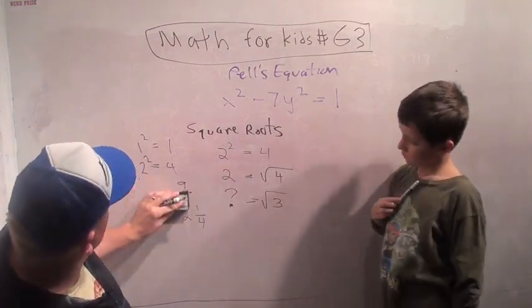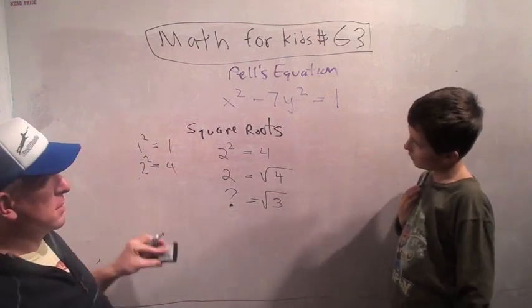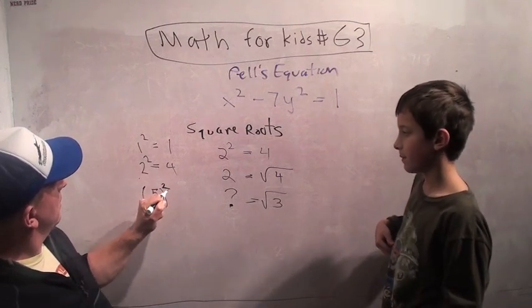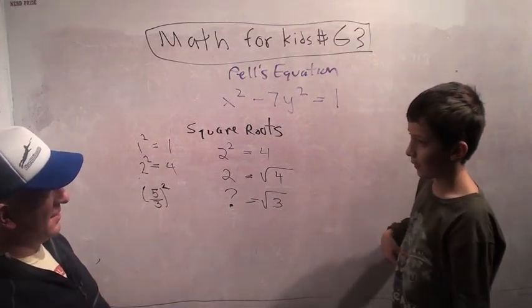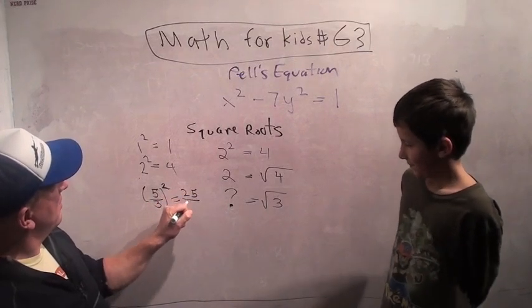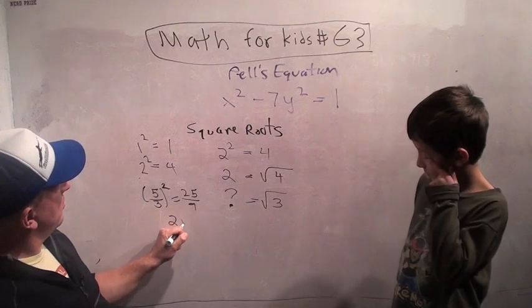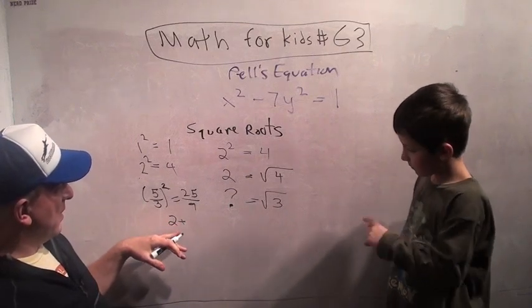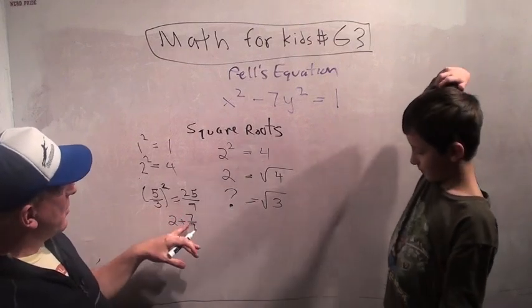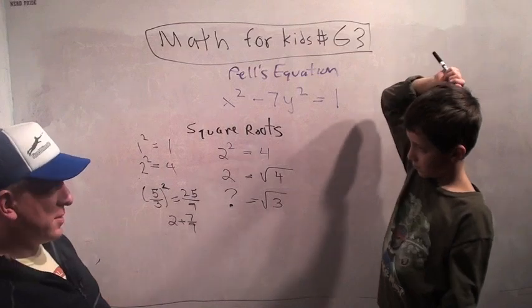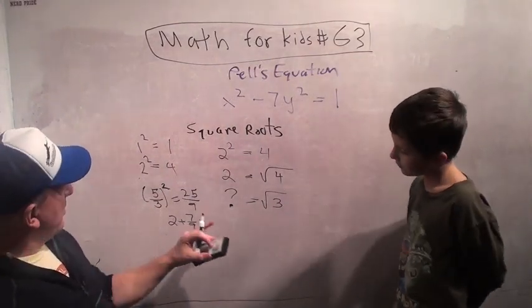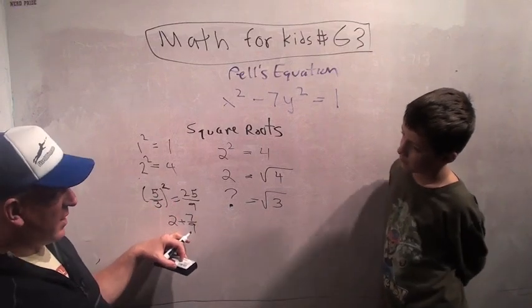Now we could try something bigger than 3 halves. Let's say maybe 5 thirds. What's 5 thirds squared? It's 25 ninths, which is 2 plus 7 ninths, because 2 is 18 ninths. So now we're getting pretty close to 3. So maybe the square root of 3 sort of looks like 5 thirds squared, I mean. The square root of 3 maybe sort of looks like 5 thirds, but it's got to be a little bit bigger than 5 thirds.